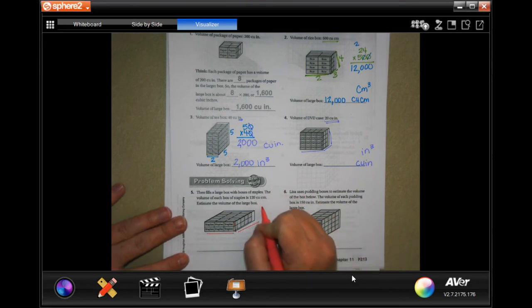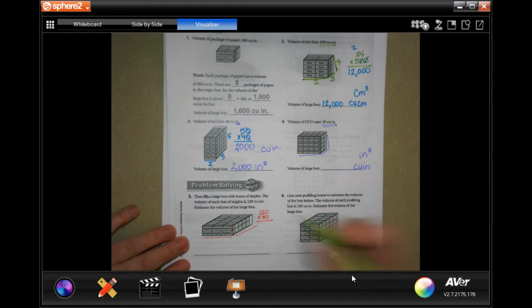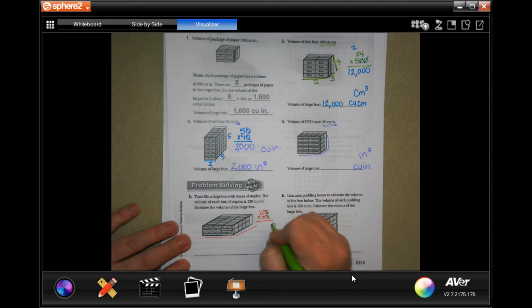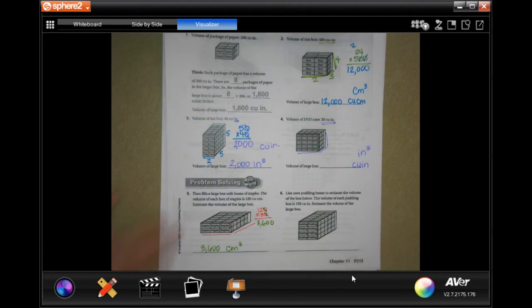So you're going to do 30 times 120. I'm going to take those two zeros off and put them at the end. Three times two is six, and three times one is three. So 3,600 centimeters cubed.